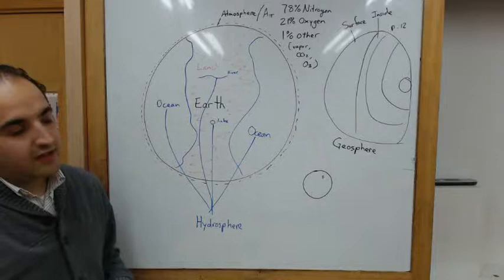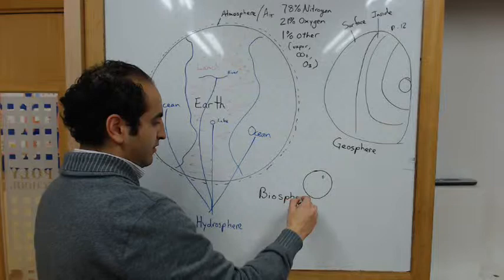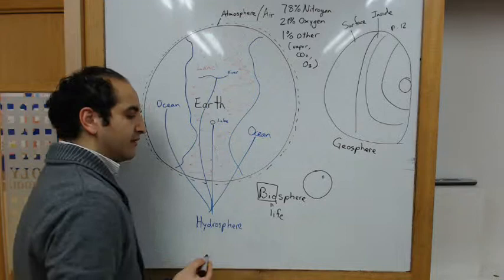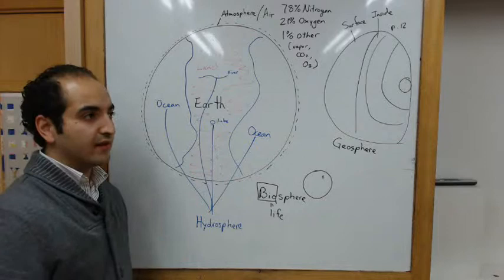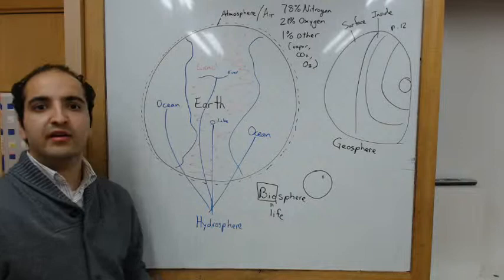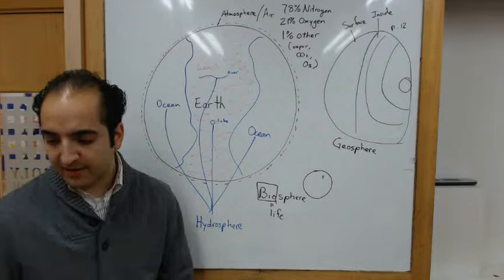And the last sphere is the biosphere. The word bio means life. So this is everything in the Earth that has things that are alive, like animals, bacteria, birds in the sky, humans, sea animals, even things that live underground, plants. Everything that's alive is part of the biosphere.